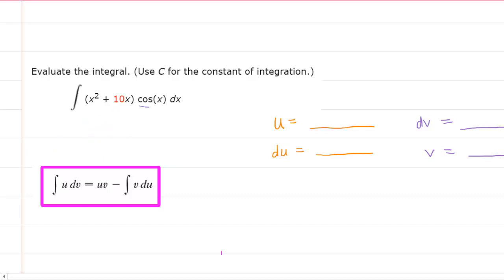On the other hand, if we let u equal the cosine of x and then we compute that derivative, well, then we get negative sine of x. So we go from one trigonometric function to another trigonometric function that isn't obviously any simpler than the original function. So this would probably not be the best choice for u. And therefore, we will go ahead and let u equal x² + 10x.